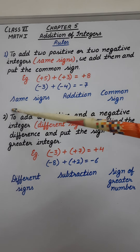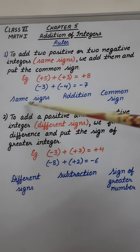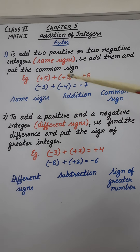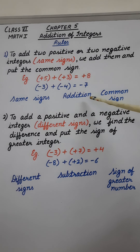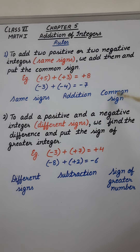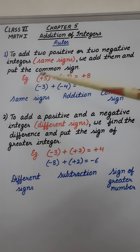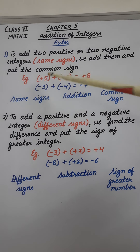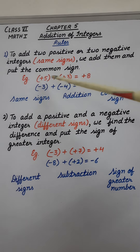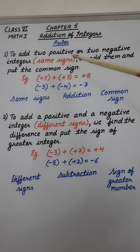So if the signs are the same, we have to do addition and the sign will be the common sign of both the numbers. If both are plus, then the sign will be plus. If both are minus, then the sign will be minus.